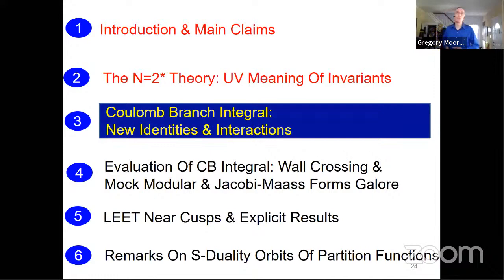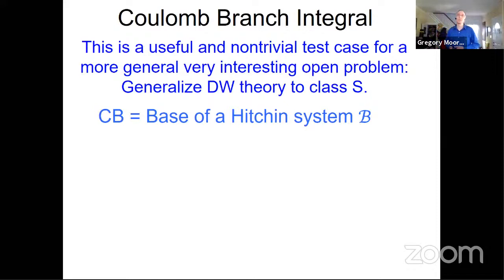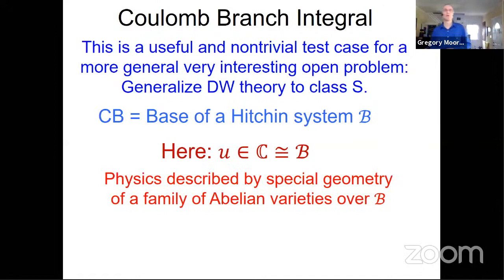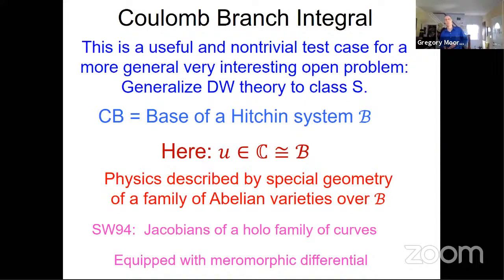The key to evaluating these invariants is to think about the Coulomb branch. There's another motivation: this theory is a very useful and non-trivial test case for generalizing Donaldson-Witten theory to class S theories. In general we would be integrating over the base of the Hitchin system in class S theories. Here the base is just the complex plane, with a generic point U being the expectation value of the Higgs field of the vector multiplet. The physics is described by the special geometry of a family of abelian varieties over B.